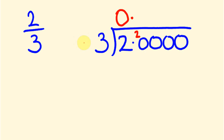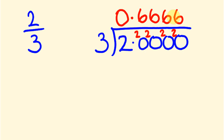3 into 20 goes 6 times because 6 threes are 18, with 2 left over. We carry that 2 — we've got 20 again, so 3 into 20 goes 6 times again, with 2 left over. And that's just going to keep going on forever and ever. We can write this as 0.6 with a dot above the 6, and what that dot means is that we have a recurring decimal — it just goes on forever. This is what the recurring dot means, so you don't have to write 6666... you just write 0.6 with the dot. That's how we go about changing a fraction into a decimal.